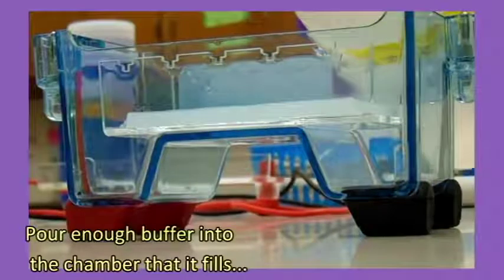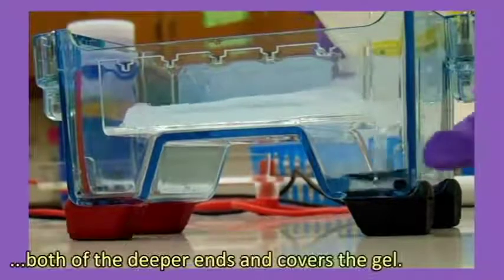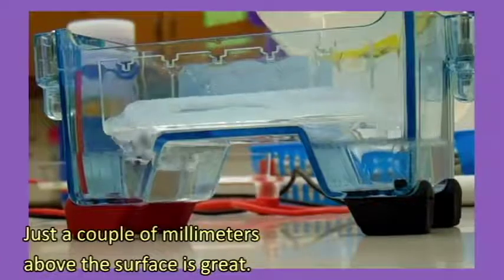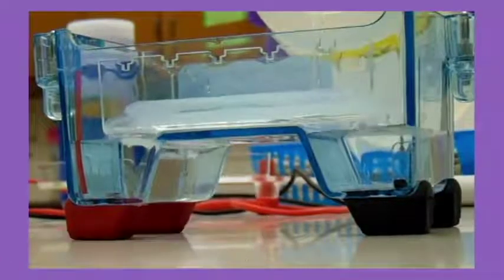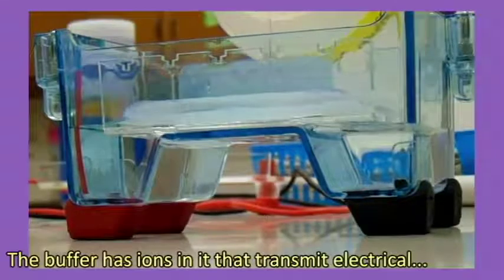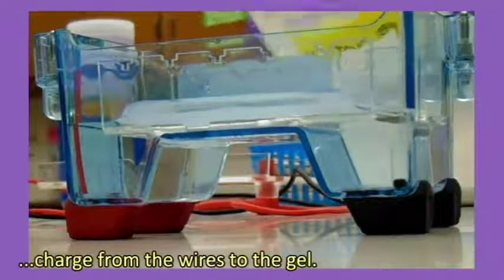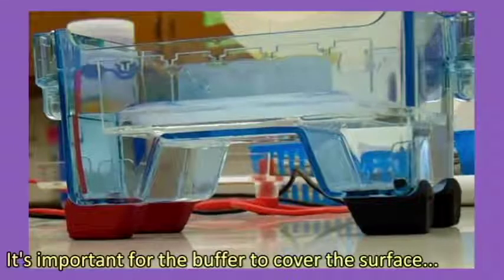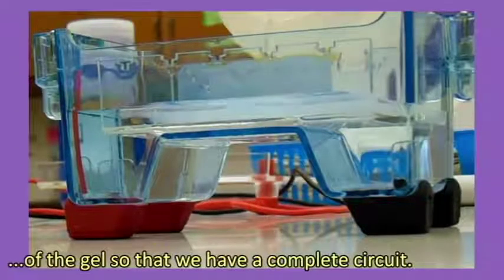Pour enough buffer into the chamber that it fills both of the deeper ends and covers the gel. Just a couple of millimeters above the surface is great. The buffer has ions in it that transmit electrical charge from the wires to the gel. It's important for the buffer to cover the surface of the gel so that we have a complete circuit.